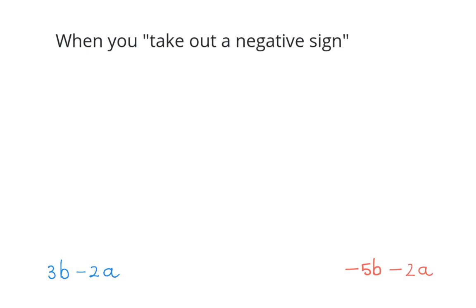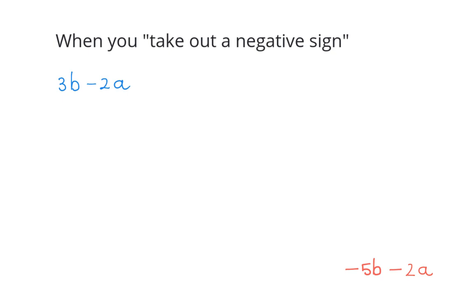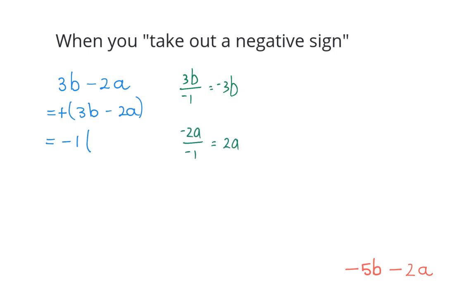Let's see what happens if you take out a negative sign. In this example you can use brackets: 3b minus 2a, and then there's a plus in front of the bracket. If you then take out a minus 1, the signs of the terms in the bracket change. The plus 3b changes to minus 3b, and the minus 2a changes to plus 2a.